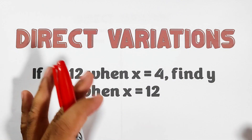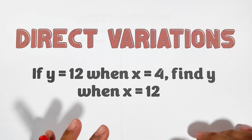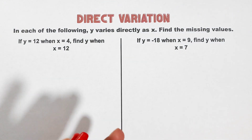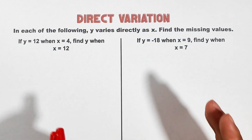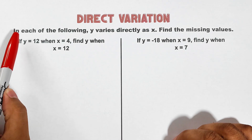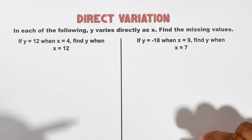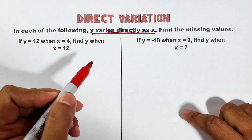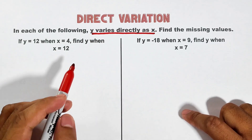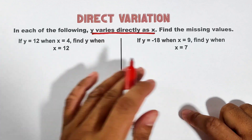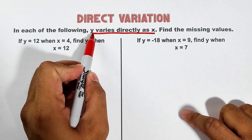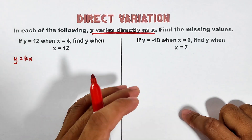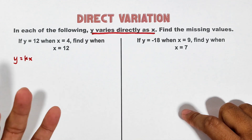Hi guys, it's me, Teacher. In today's video we will talk about direct variations. We have four examples for this video about direct variations. In each of the following, y varies directly as x — find the missing values. We need to convert this into an equation to solve these problems. We put y is equal to kx, which is the equivalent equation of y varies directly as x.